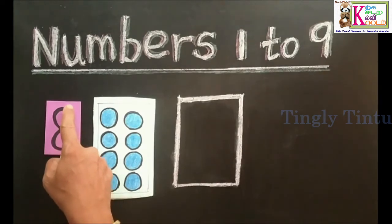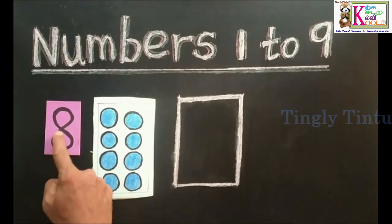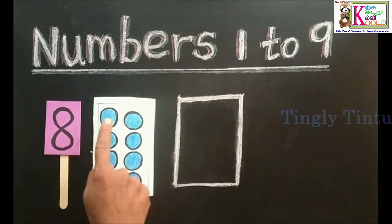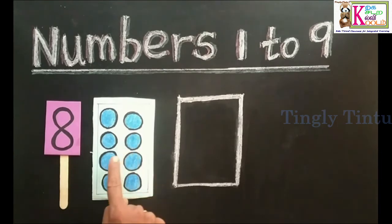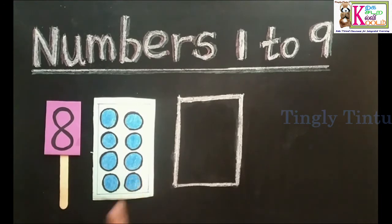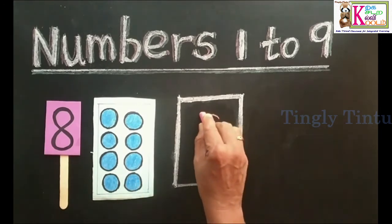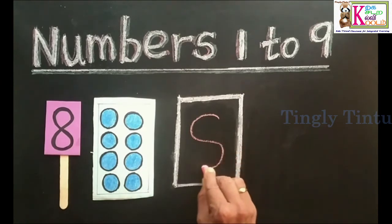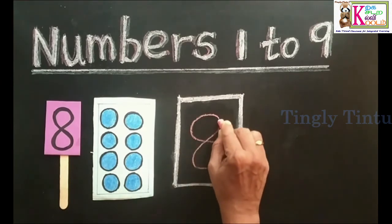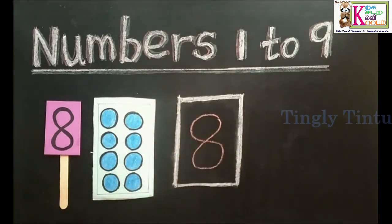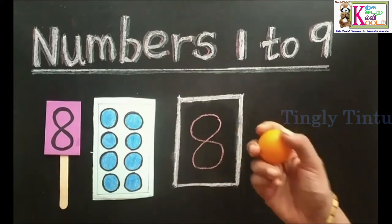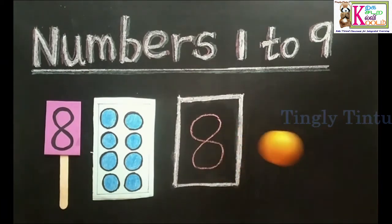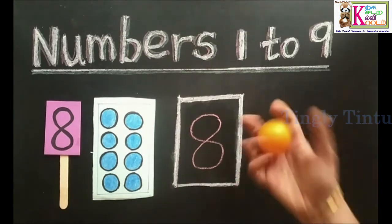S pattern, go up. 8. 1, 2, 3, 4, 5, 6, 7, 8. 8 candies. S pattern, go up. Come down, come down.